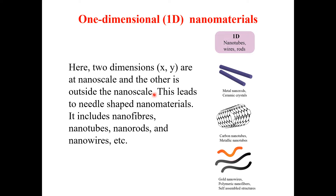This leads to needle-shaped nanomaterials. Examples include nanotubes, nanowires, nanorods, metal nanorods, ceramic crystals, carbon nanotubes, metallic nanotubes, gold nanowires, and polymeric nanofibers or self-assembled structures. To clarify: one-dimensional nanostructures are those whose two dimensions are at the nanoscale and the third dimension is outside the nanoscale.